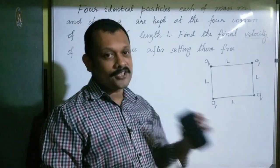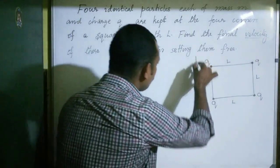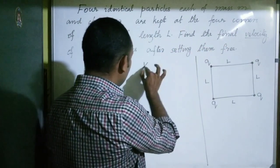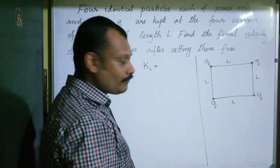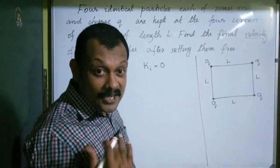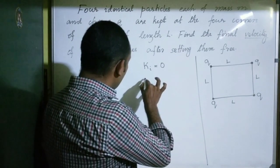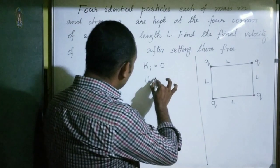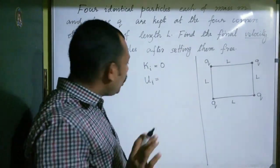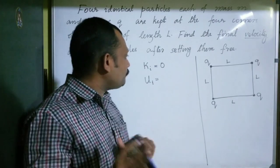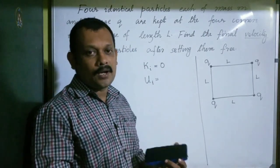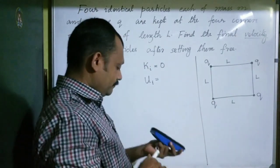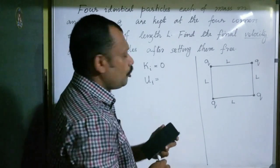So we will use energy conservation. Initially the particles are at rest, so the initial kinetic energy is zero. The system will have an initial potential energy. This example is also seen in NCERT Example 2.4. What is the initial potential energy of the system?